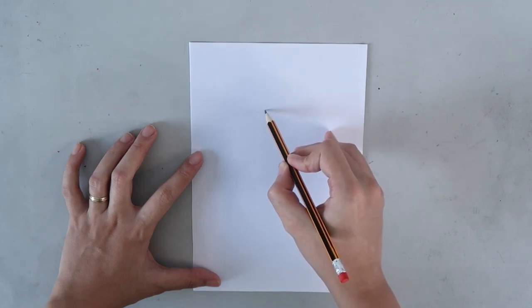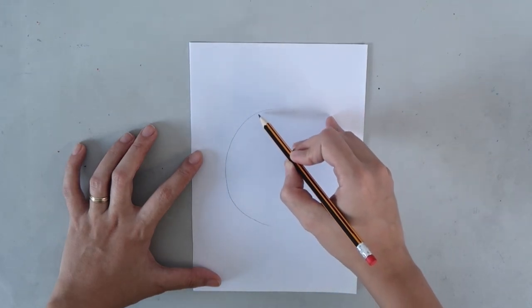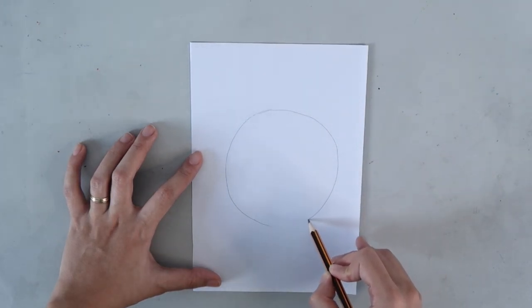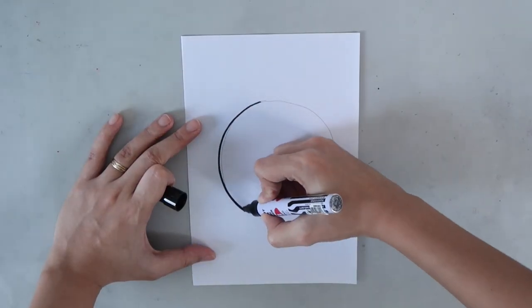Using your pencil, draw a circle at the middle of your paper. Then, trace it with a marker.